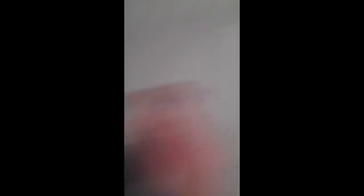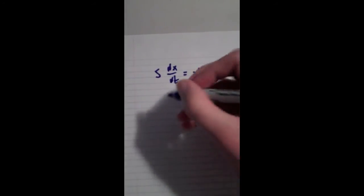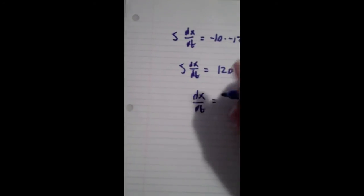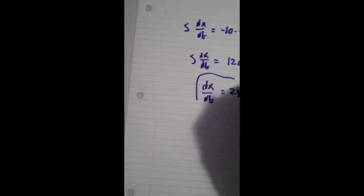So just sort of wrapping up here. 5 dx/dt equals negative 10 times negative 12. So 5 dx/dt equals 120. dx/dt therefore equals 24. And that's our answer.